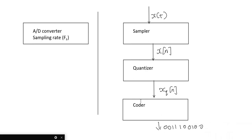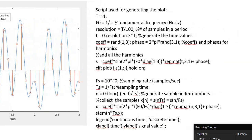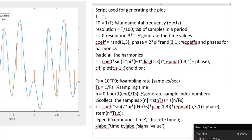Both the quantizer and the coder are very context specific and depend on what the task at hand is. So for our discussions, we are mostly concerned with going from x of t to x of n. For us, going from this particular block represents the sampling process.